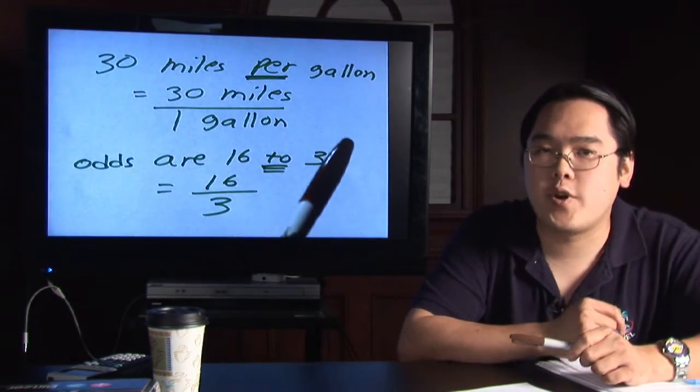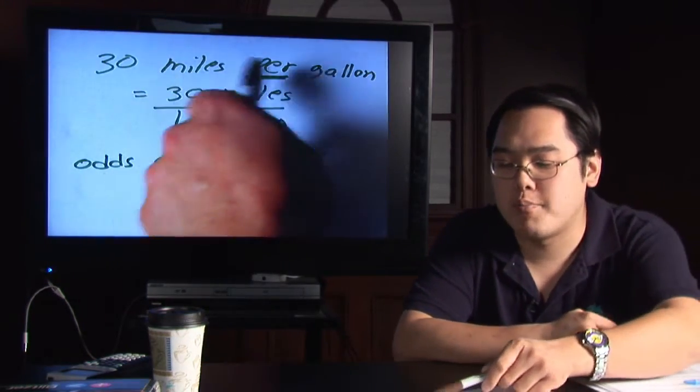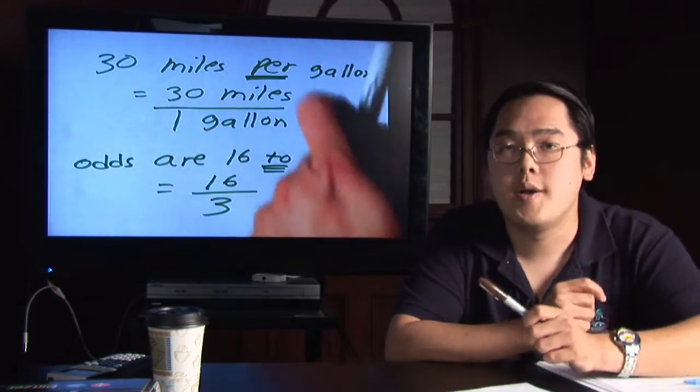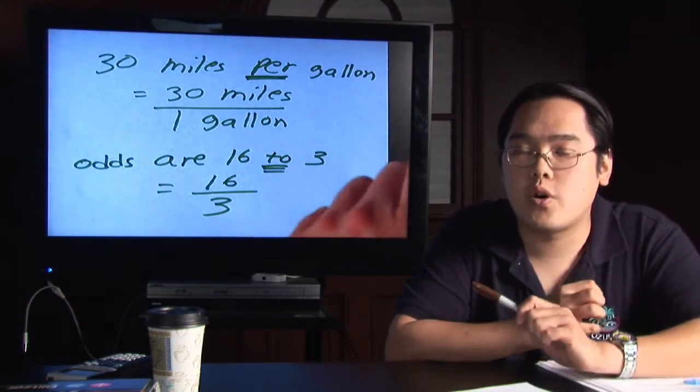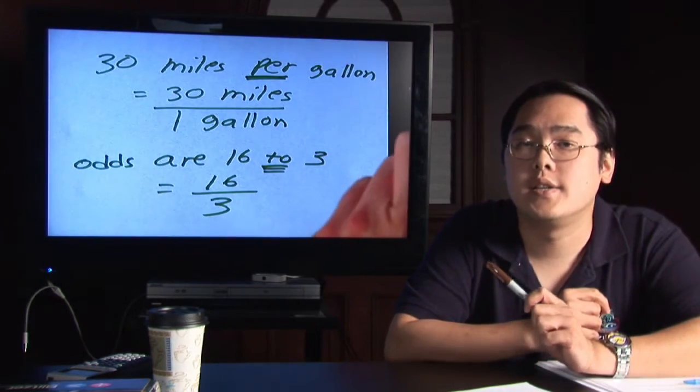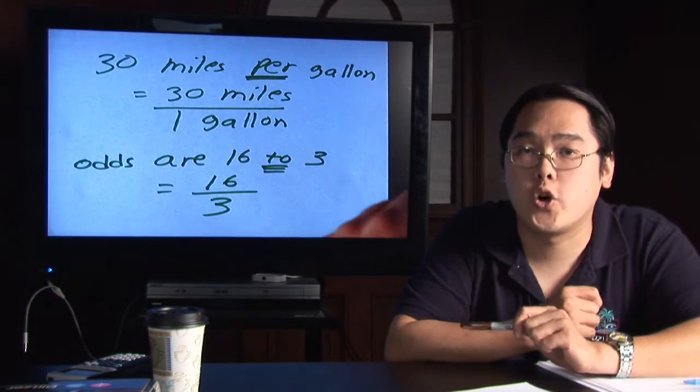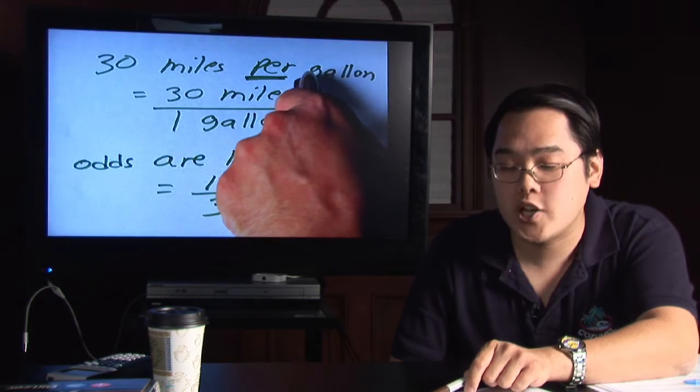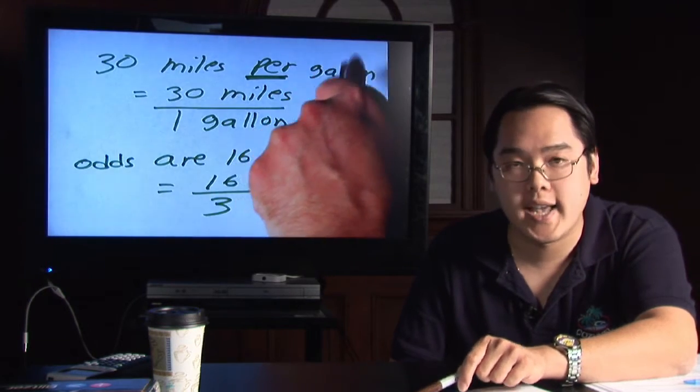Take, for example, the phrase 30 miles per gallon. Now, the emphasis here, the focus here, is on the word per, because the word or numbers that are right after the word per is going to give you an indicator as to what goes on the bottom. Now, per gallon, the implication here is per one gallon.